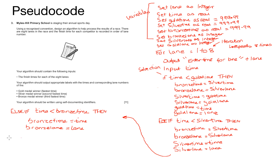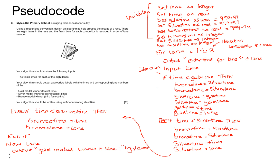That's the end of the three selection comparisons for this algorithm. You must make sure you end your if statements, and then I've added back in 'next lane' — that's important to increment the lane, otherwise we'd always be stuck on lane one and never get out of the loop. After the loop, we output the gold medal winner and their lane, the silver medal winner and their lane, and the bronze medal winner and their lane. Don't forget the algorithm asks us to output labels. There are four more output statements needed — two for silver and two for bronze — and I'm sure you can manage those.